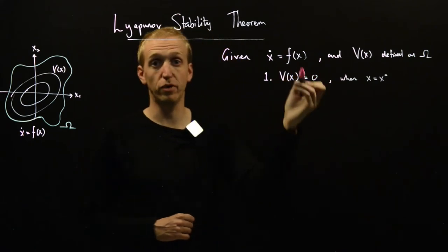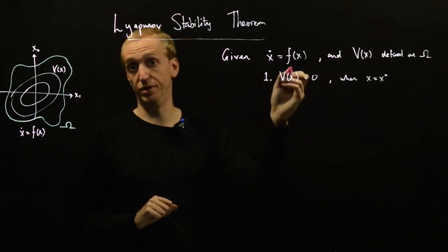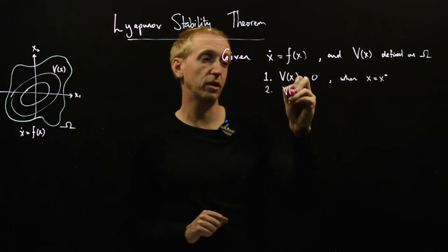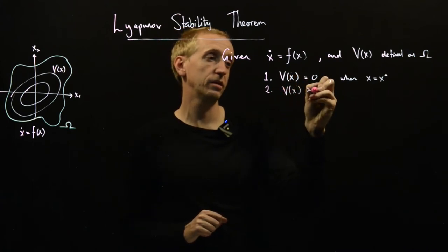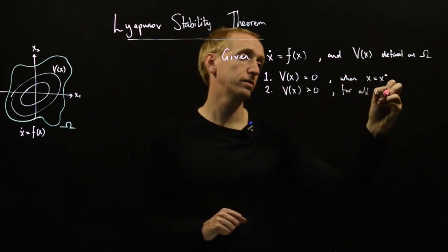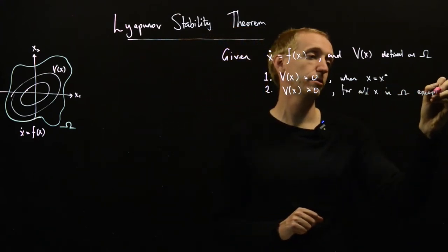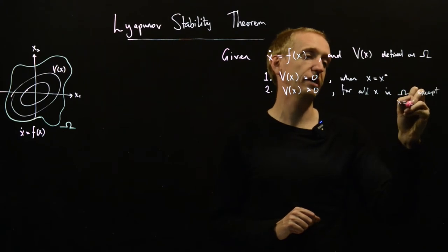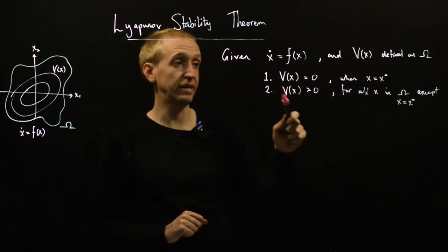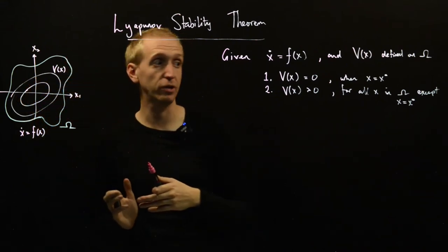And we also have some Lyapunov function V that is defined on our region of the state space omega. And now what conditions do we need in order to be able to make some conclusions about stability? Well, the first thing that we need is that V of x is equal to 0 when x is equal to x star. So this is just saying that the value of our Lyapunov function at our equilibrium point, which on this picture is at the origin, is equal to 0.